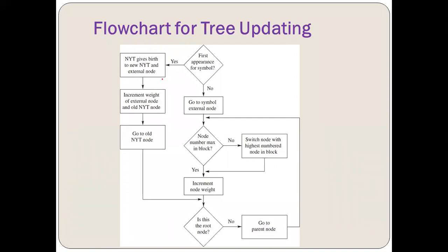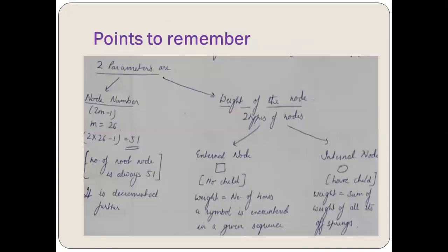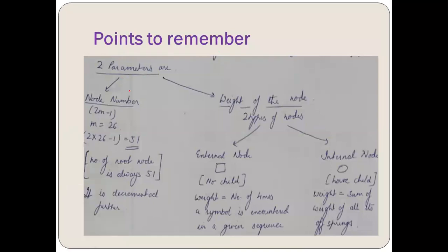We have this flowchart, but I'm not going to elaborate on it at this first stage because it will be a little confusing. We are going to work directly with the question itself. There are two parameters we need to understand. The first is called the node number and the second is called the weight of the node.